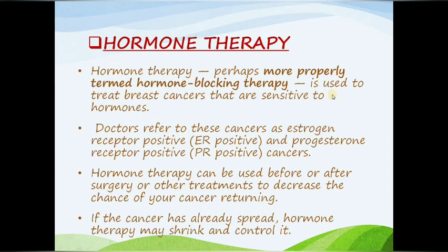The next is hormone therapy. As discussed in our last breast cancer lecture covering estrogen and progesterone, hormone therapy is based on blocking estrogen from joining with receptors present on cancer cells, so we can reduce the growth of cancer cells. Hormone therapy — more properly termed hormone-blocking therapy — is used to treat breast cancers that are sensitive to hormones.